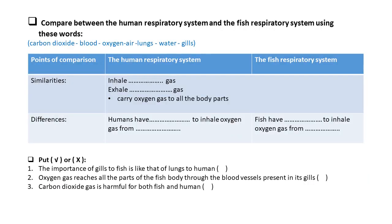Compare the human respiratory system and the fish respiratory system. Similarities: both fish and humans inhale oxygen gas while they exhale carbon dioxide, and both carry oxygen gas to all body parts. Difference: humans have lungs to inhale oxygen gas from air, while fish have gills to inhale oxygen gas from water.